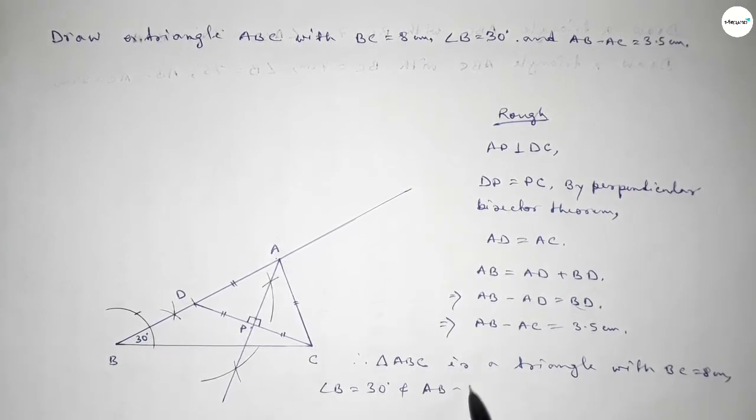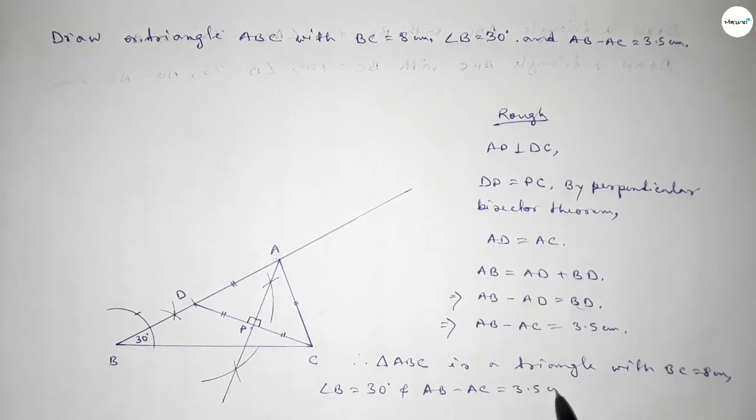So therefore, triangle ABC is a triangle with BC equal to 8 centimeter, angle B equal to 30 degree, and AB minus AC equal to 3.5 centimeter. That's all, thanks for watching. If this video is helpful to you, then please share it with your friend. Thanks for watching.